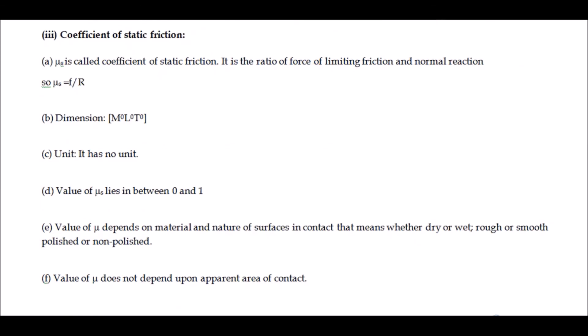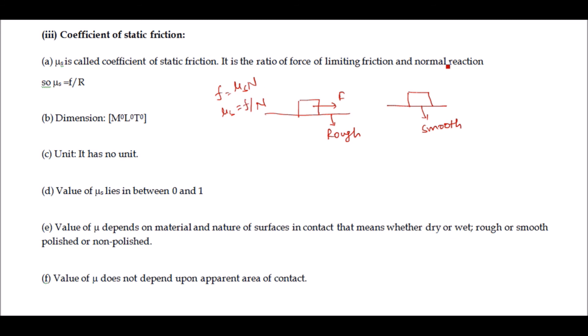Now we have learned about the coefficient of static friction, μs. As observed in the static friction formula, μs is the coefficient of static friction — it indicates how rough or smooth the surface is. For a rough surface the value of μs is higher, meaning more force is needed to move the object. The value of μs equals f divided by N — it is the ratio of limiting friction to normal reaction. It is a dimensionless quantity whose value lies between zero and one.